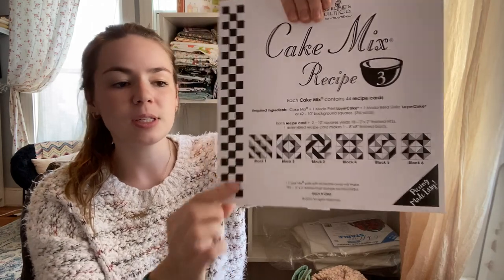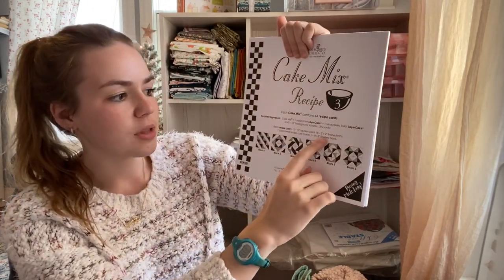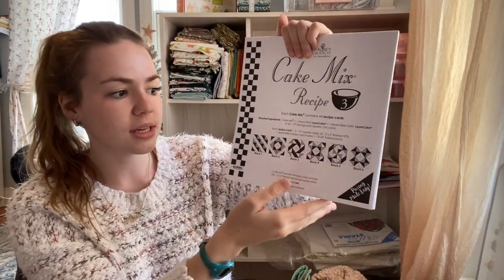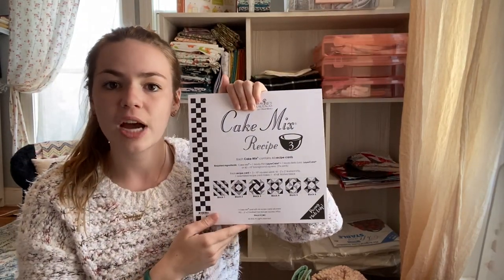Like I said there are a lot of different cake mix recipes. The reason for this is that each one makes a different type of block. So this one specifically makes, it'll tell you the sizes right here, it makes 2 inch finished half-square triangles. So the whole sheet just is for making 2 inch half-square triangles.